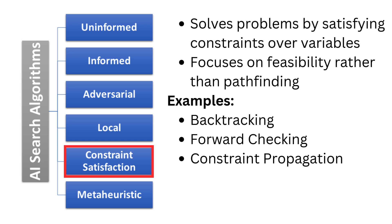Unlike path-finding algorithms that focus on finding optimal routes, constraint satisfaction problems focus on assigning values to variables while ensuring all constraints are satisfied. They are used in scheduling, map coloring, and puzzle-solving problems. Examples include backtracking, forward-checking, and constraint propagation.